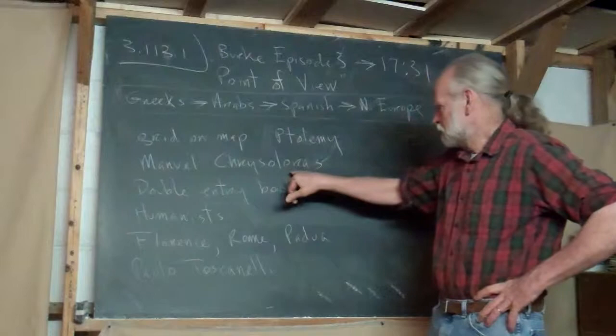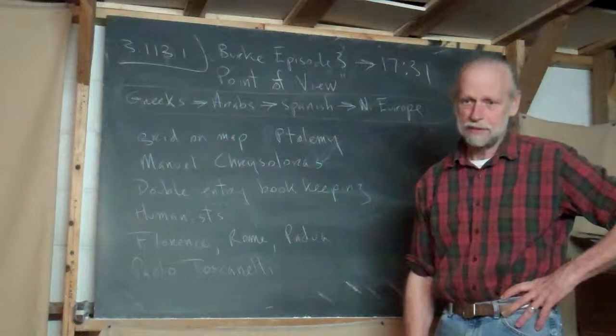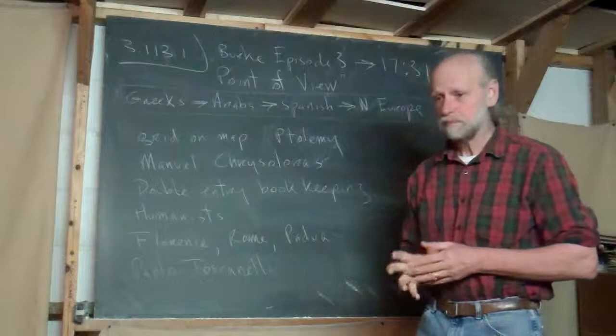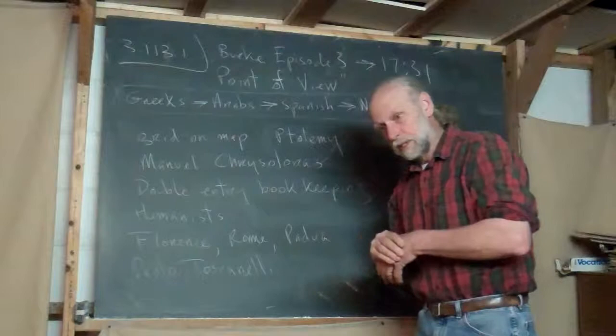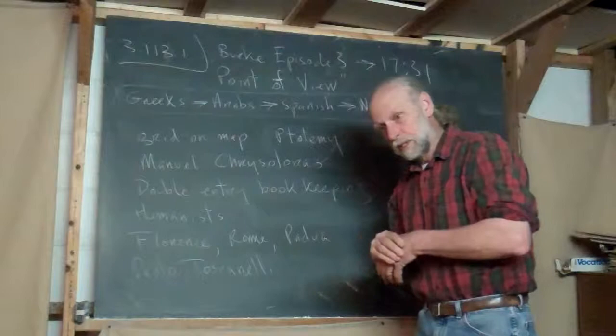He's going to talk about a guy named Manuel Cristoloris. These would be names to look up if you wanted to fill out the period or do a little research on your own. You could quickly go to Wikipedia and look these up. He went from Constantinople to Florence.